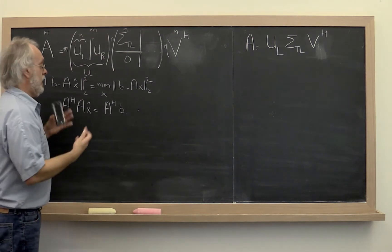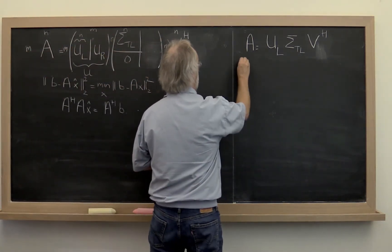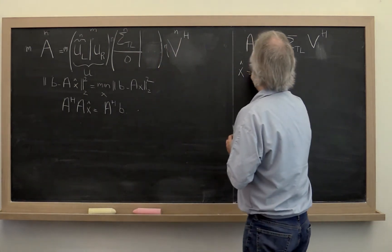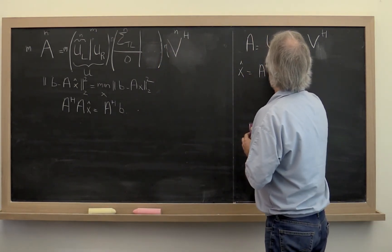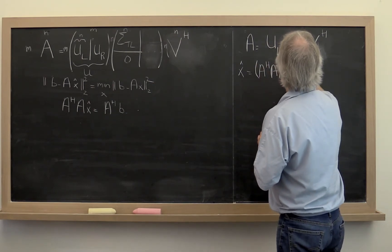And that actually we can then simply write as the solution that we want is equal to A Hermitian A quantity inverse times A Hermitian B.